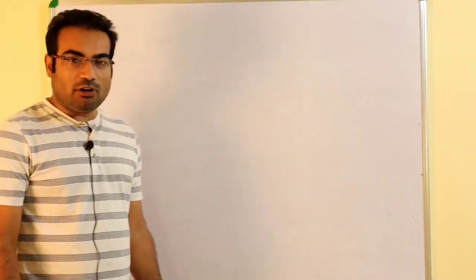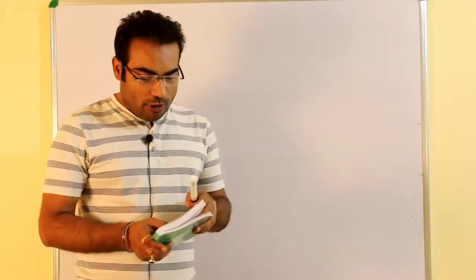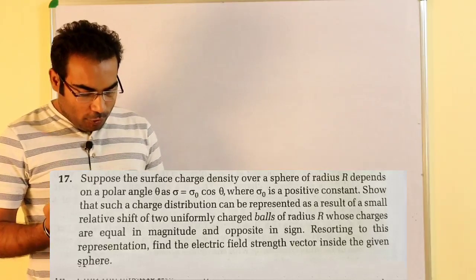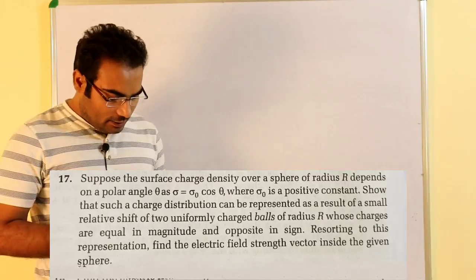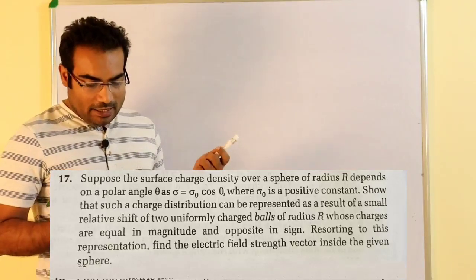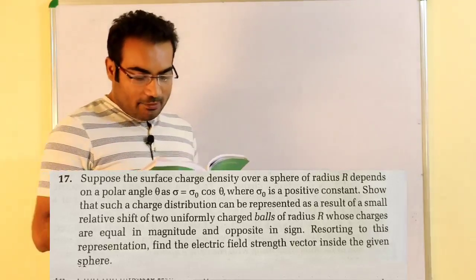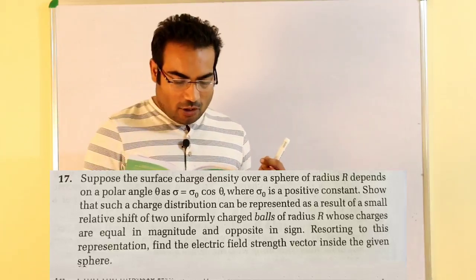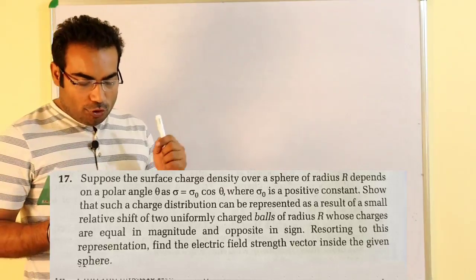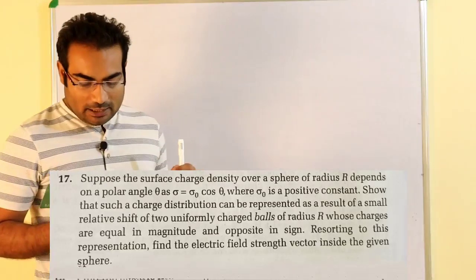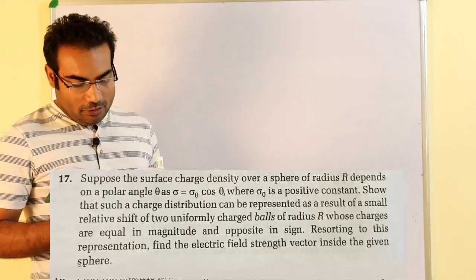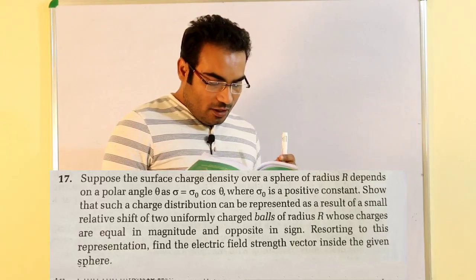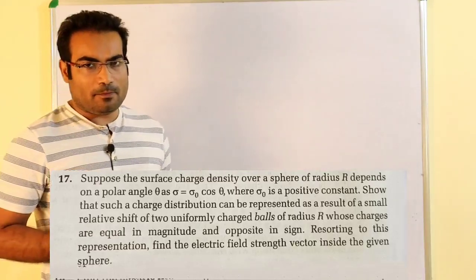Hello everyone, this is Sujit Kumar Jha and you are watching Erodov School of Physics. In this video, I am going to discuss question number 17 of Irodov. In this question, suppose the surface charge density over a sphere of radius R depends upon polar angle as sigma equal to sigma naught cos theta, where sigma naught is a positive constant, such that this charge distribution can be represented as a result of a small relative shift of two uniformly charged balls of radius R, whose charges are equal in magnitude and opposite in sign. Find the electric field strength vector inside the given sphere.